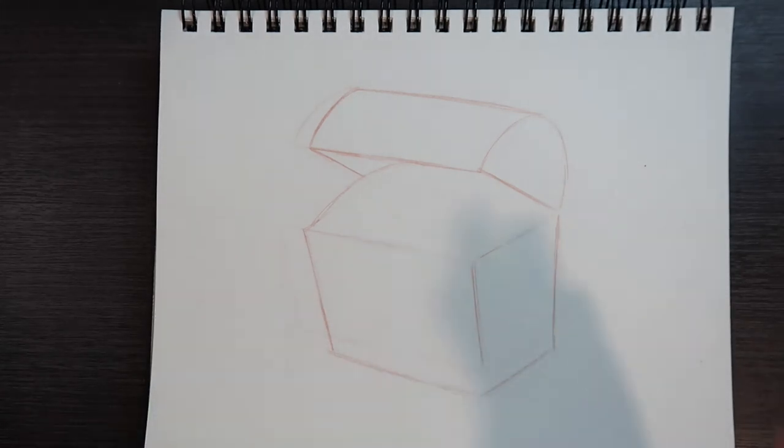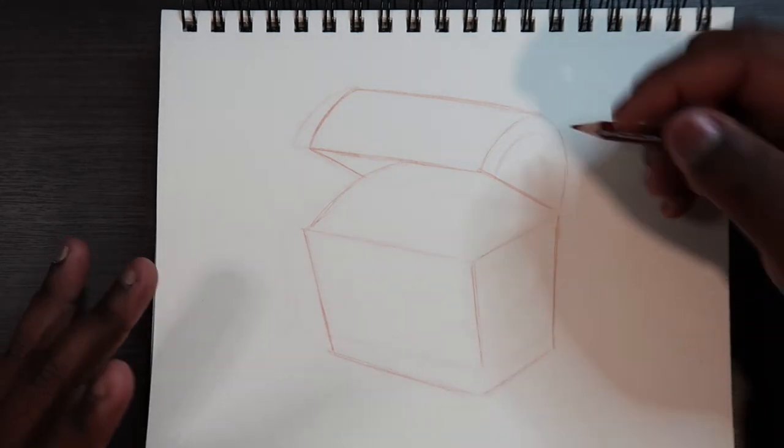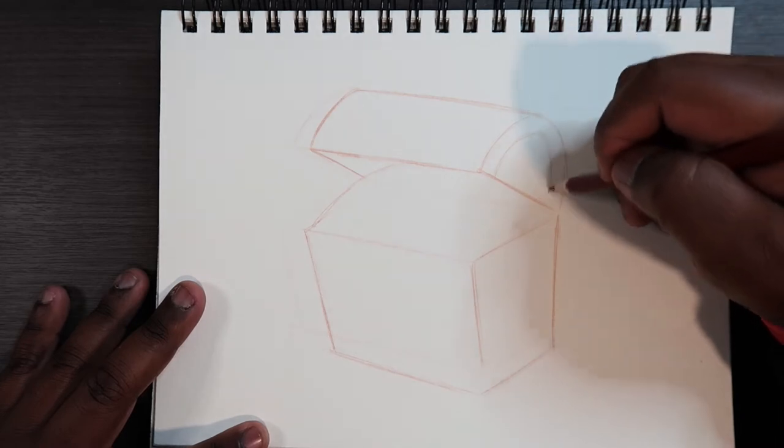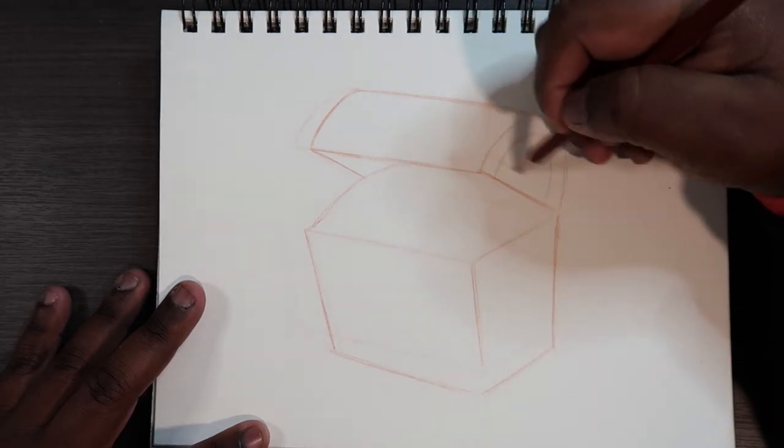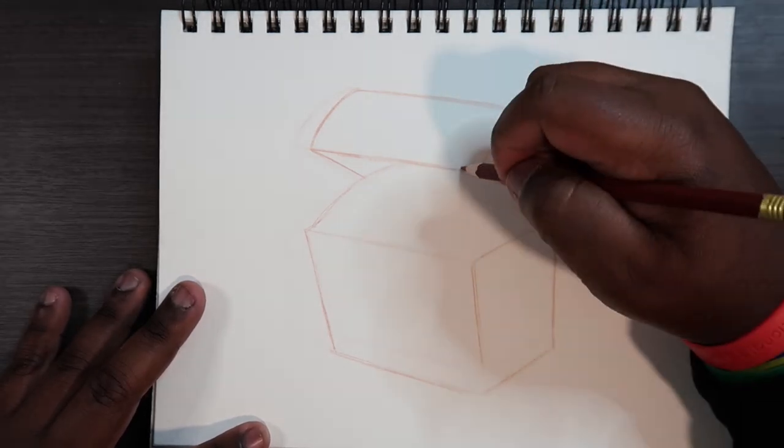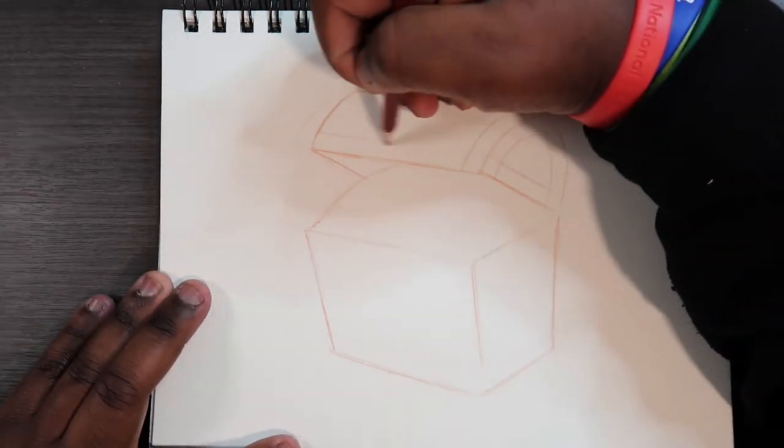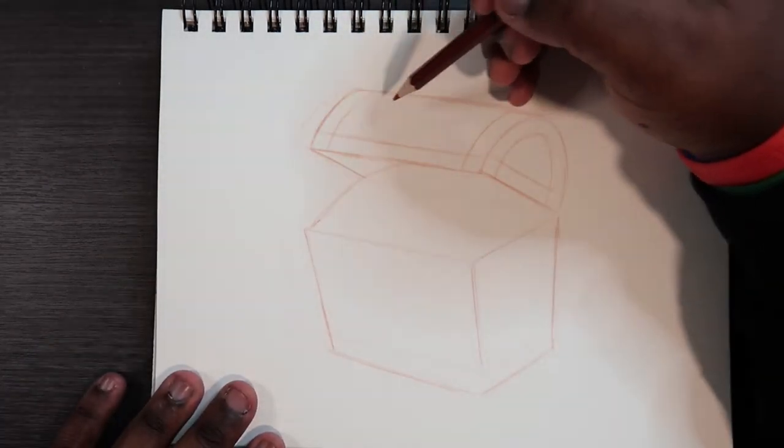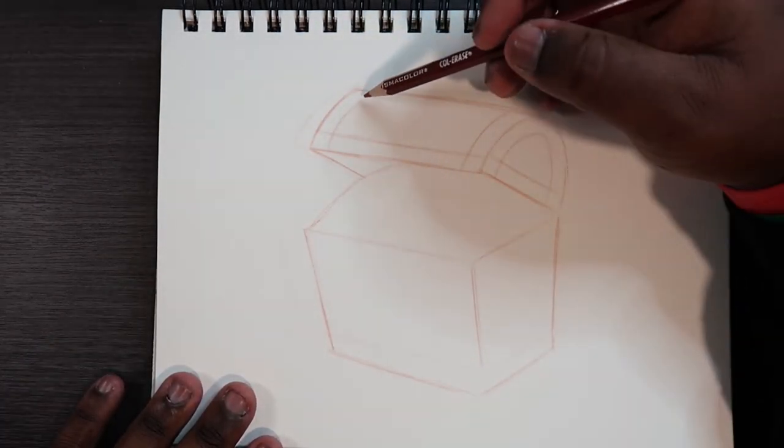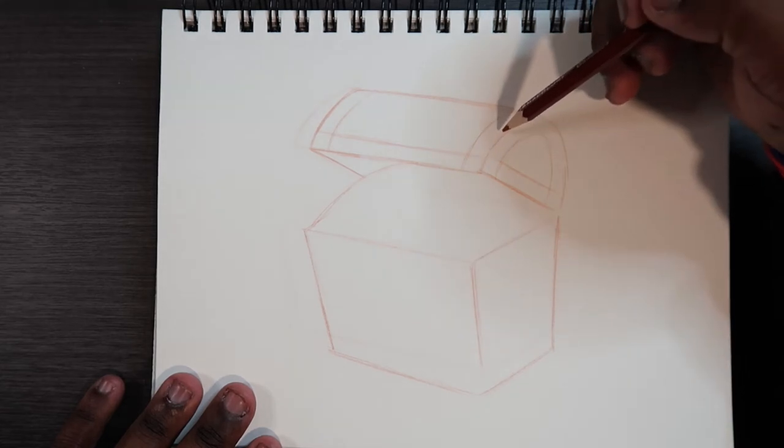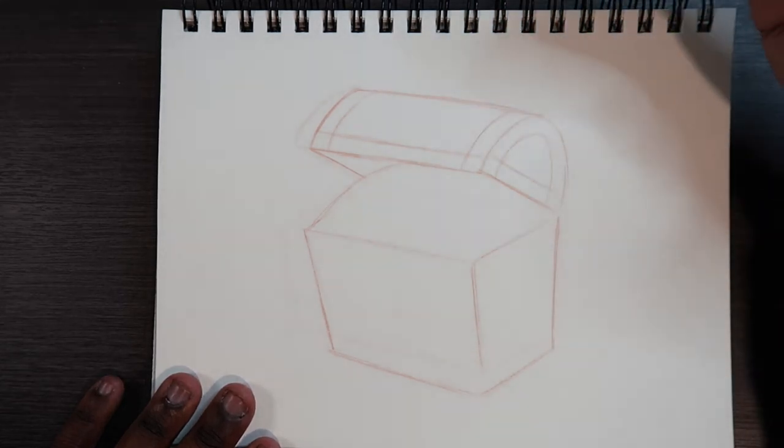Now what I like to do when I'm drawing treasure chests—this is totally optional to you guys—I like to add little metal corners to it, but I'd rather just show you to help better explain it. So I'm just going to add those guidelines in place now. Now what I just drew, we can pretend those are like metal corners, because you know treasure chests have locks, right?